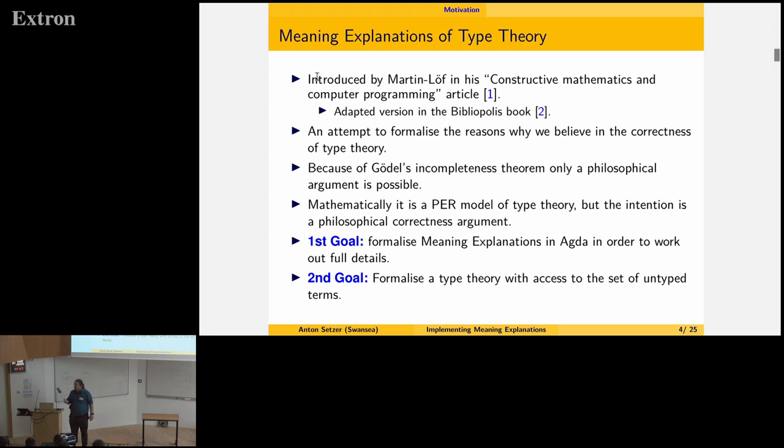So the goal was in some sense to give a consistency argument for type theory. So essentially he took every judgment of type theory, and you give a big natural language sentence, and then you look at each of these rules and show if the meaning of each hypothesis of a rule holds, than the meaning of the conclusion holds.